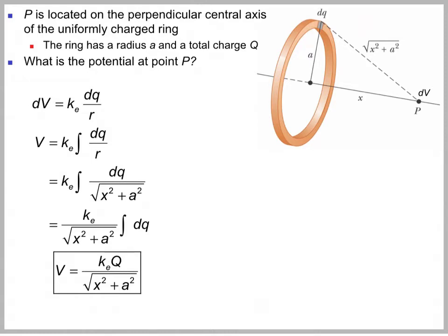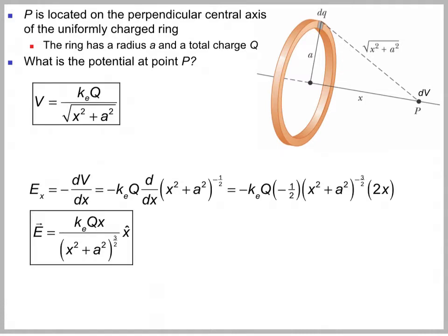If I wanted to find the electric field at that point, I could take the derivative. The electric field is minus dV/dx, which is minus kQ times the derivative of (x squared plus a squared) to the minus one-half power. Taking the derivative, it becomes minus one-half times that same thing to the minus three-halves power, times 2x, giving kQx over (x squared plus a squared) to the three-halves power. This is exactly what we got when we integrated to find the electric field before, but slightly simpler — we didn't have to break the field into components, use symmetry, and multiply by cosine theta.